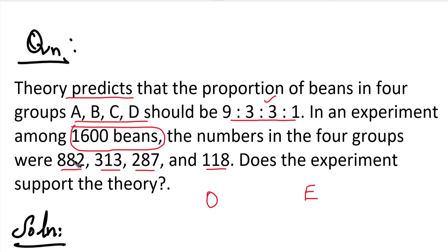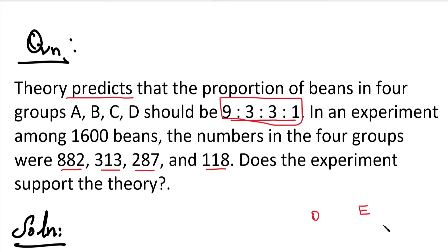There are 4 observed frequencies. So the corresponding 4 expected frequencies we will try and predict. First, we state the null hypothesis H0 and alternative hypothesis H1. H0 is the null hypothesis. The null hypothesis means there is no significant difference between observed frequency and expected frequency — that is, in the two frequencies, there is no difference.